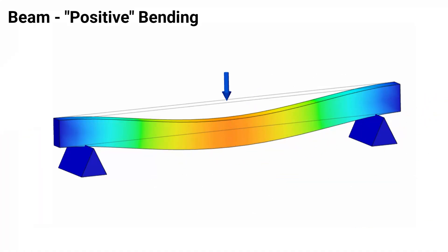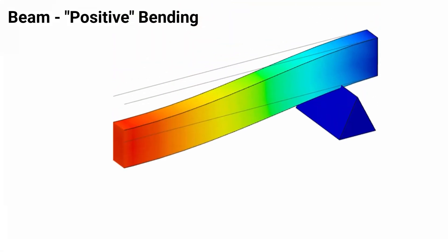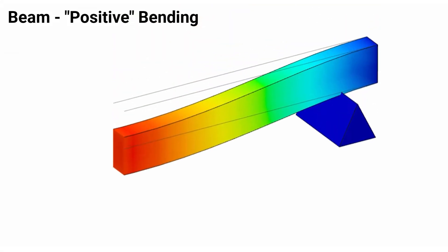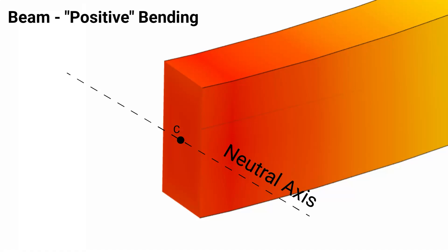For this positive bending case, let's make a section cut directly through the middle of the beam to examine the stresses developed due to bending — in other words, due to a bending moment. Examining this rectangular cross section, we will first denote the neutral axis. In this case, we're dealing with a rectangular cross section and the centroid is going to act directly in the middle.